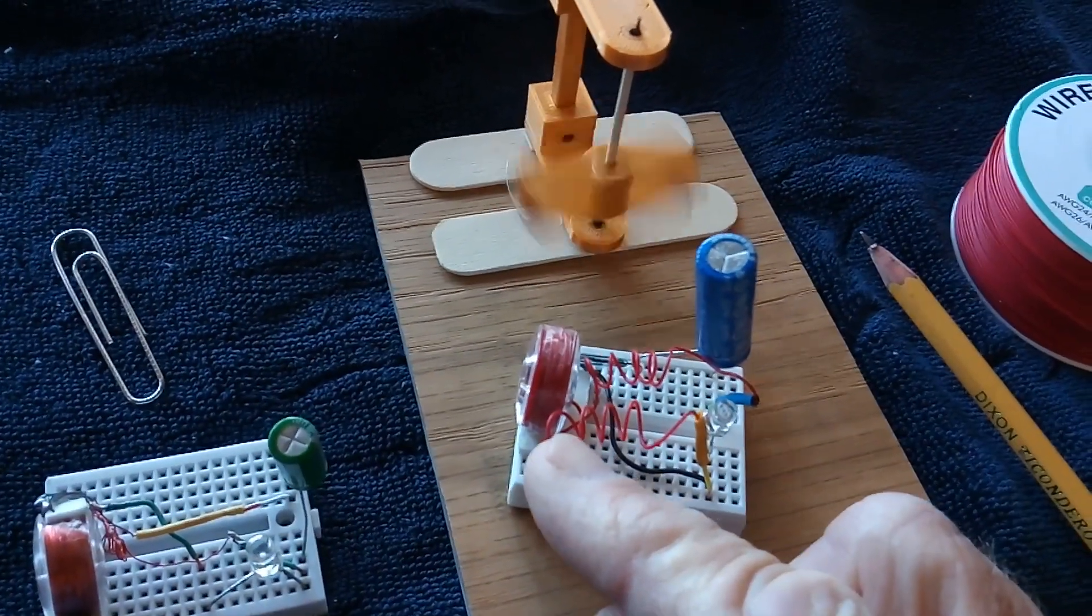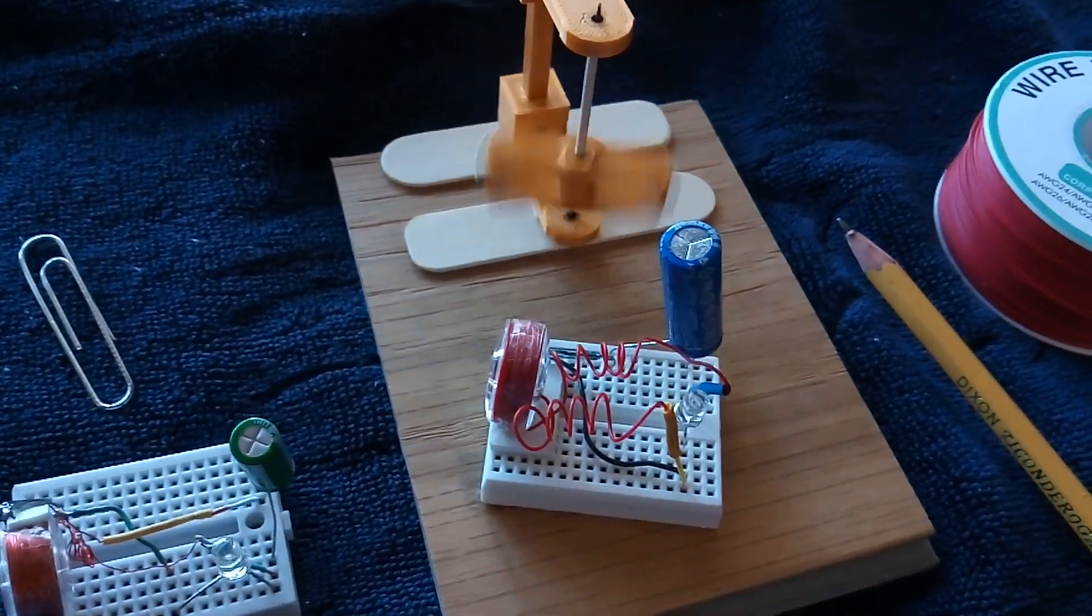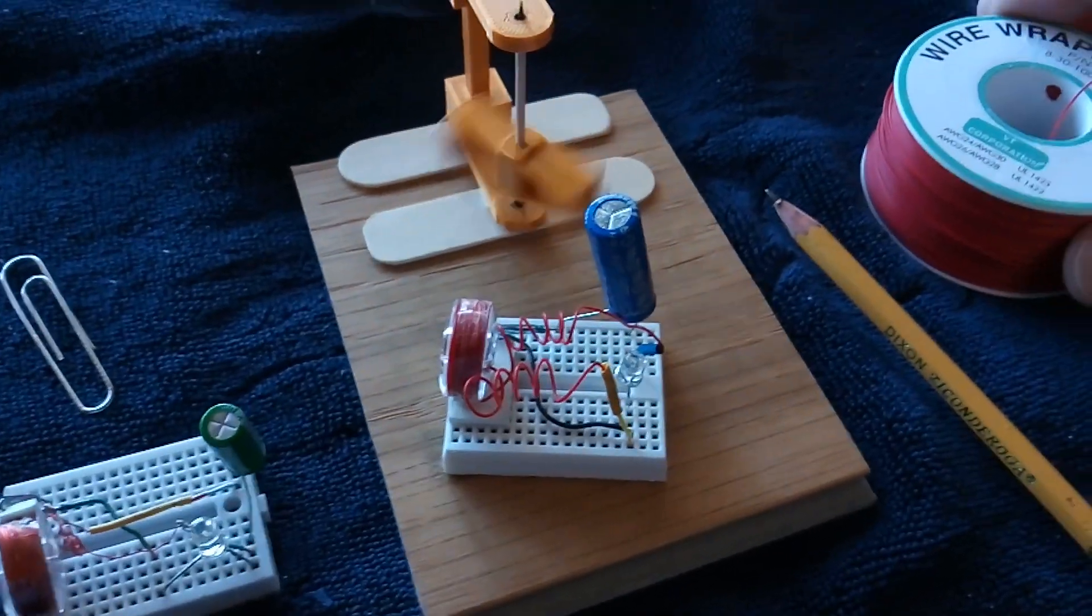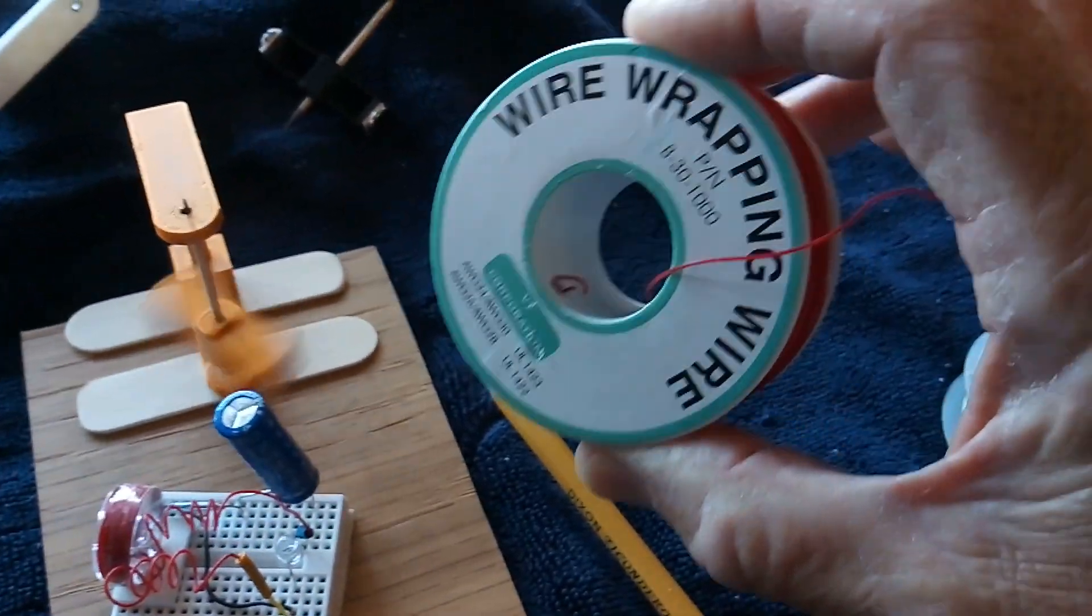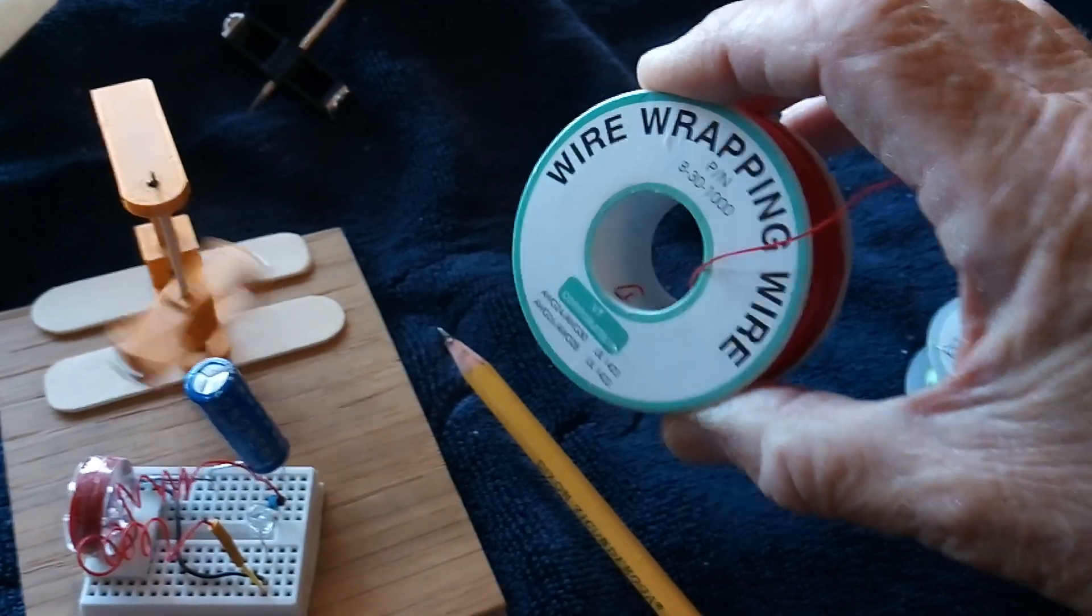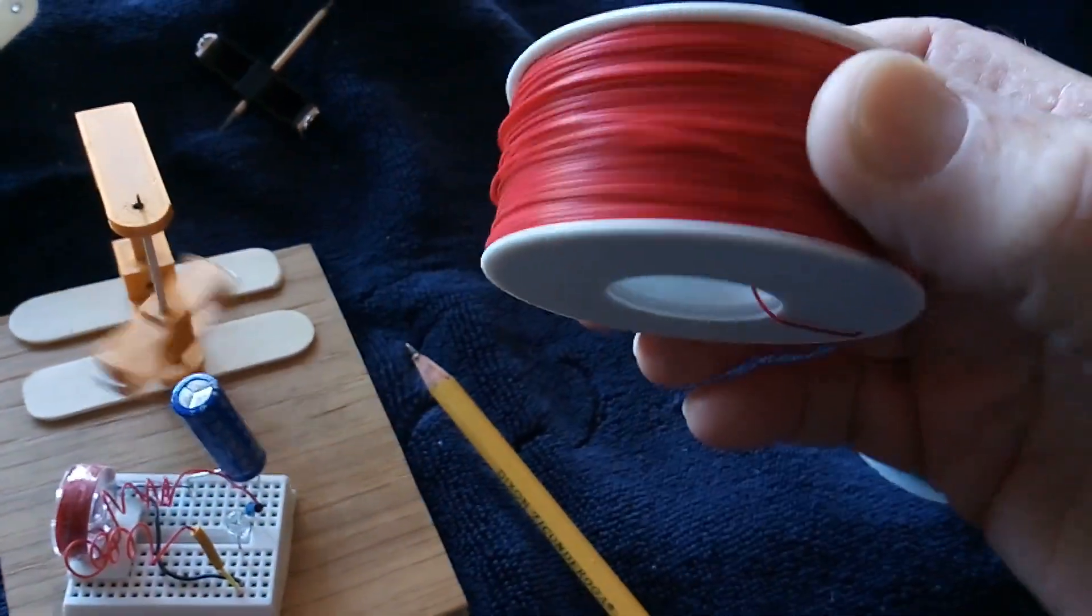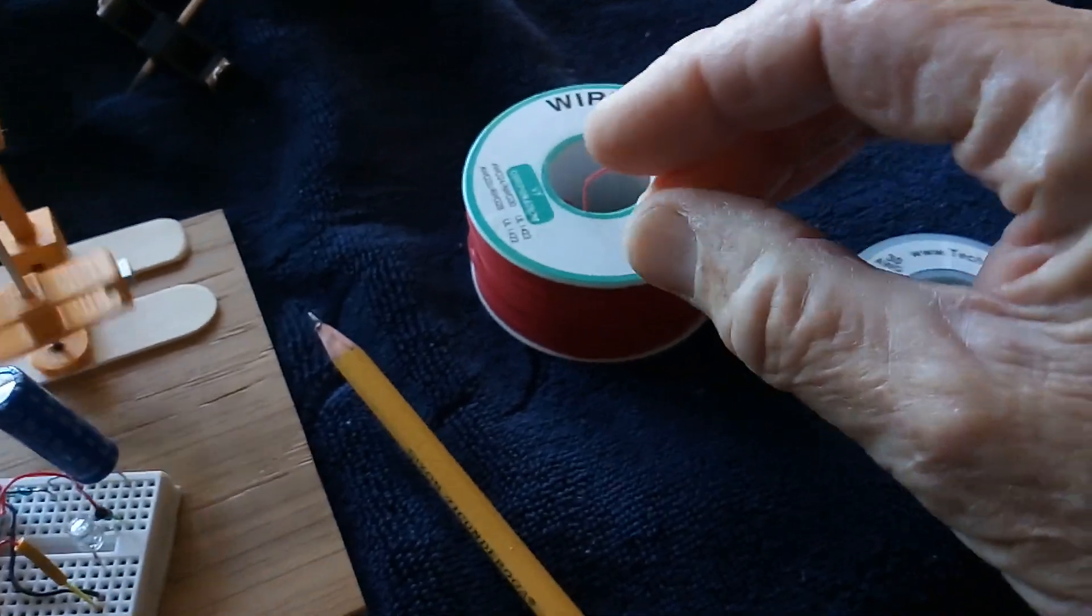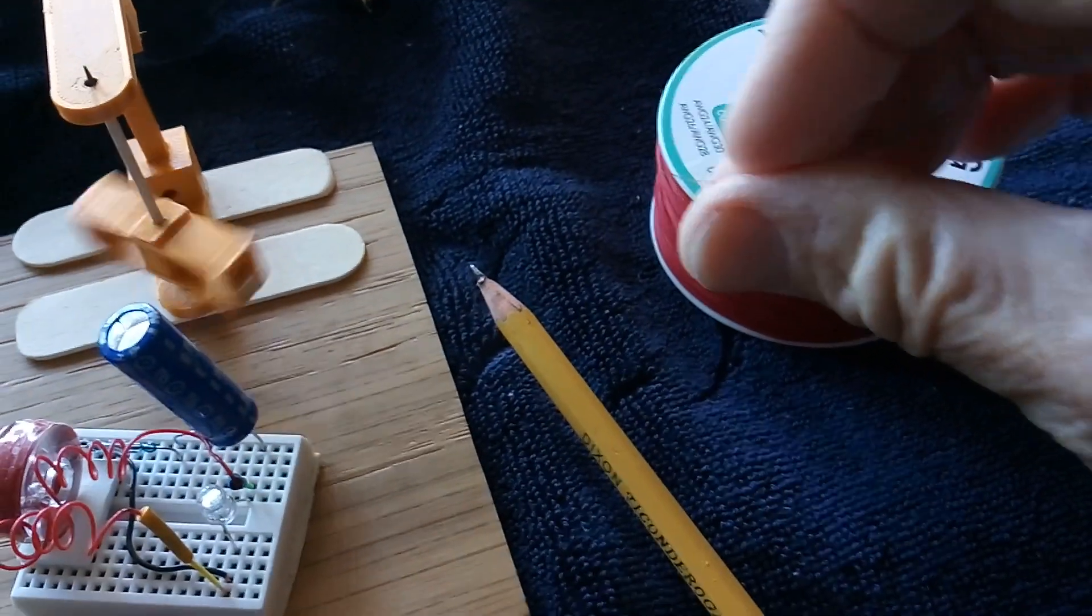The first thing that came along was this wire. I stumbled on it—it was one of these discount websites—and it's called wrapping wire. The discount place that I found it, this is a big huge spool of this.